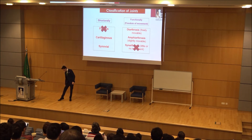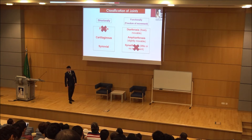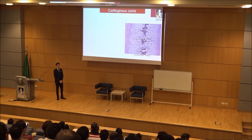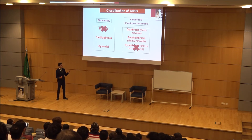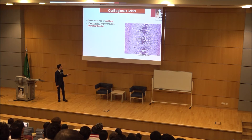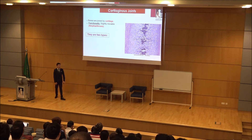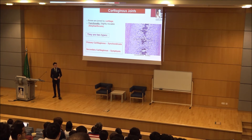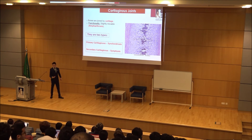Cartilaginous joints — the second type. From its name, the definition is a type of joint joined by cartilage. Functionally, they are amphiarthrosis — slightly movable. It has two subtypes. The first is called primary cartilage, and the second is secondary cartilage. The medical terms are synchondrosis for primary and symphysis for secondary. Cartilage is a specific type of connective tissue that is avascular — meaning no vascularity, no capillary supply. The three types of cartilage are hyaline, fibro, and elastic.